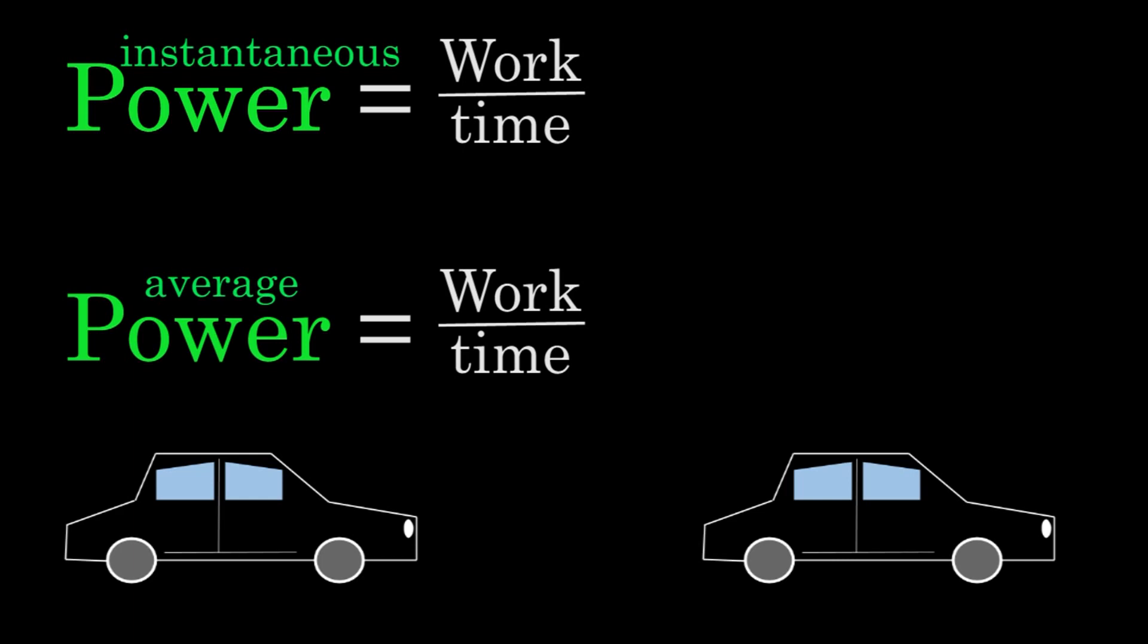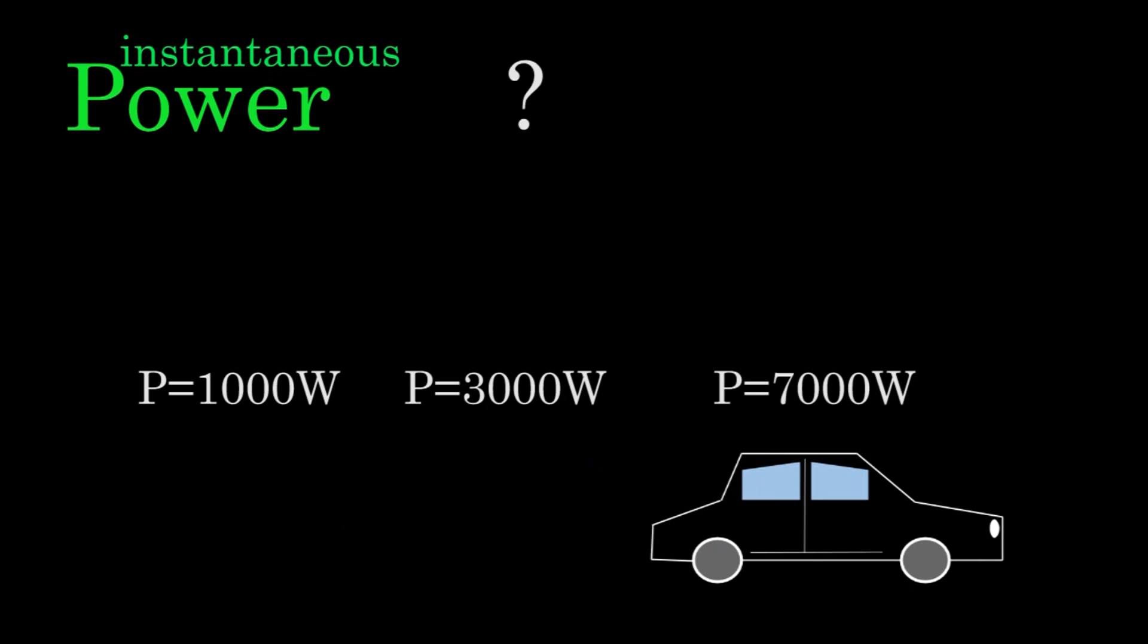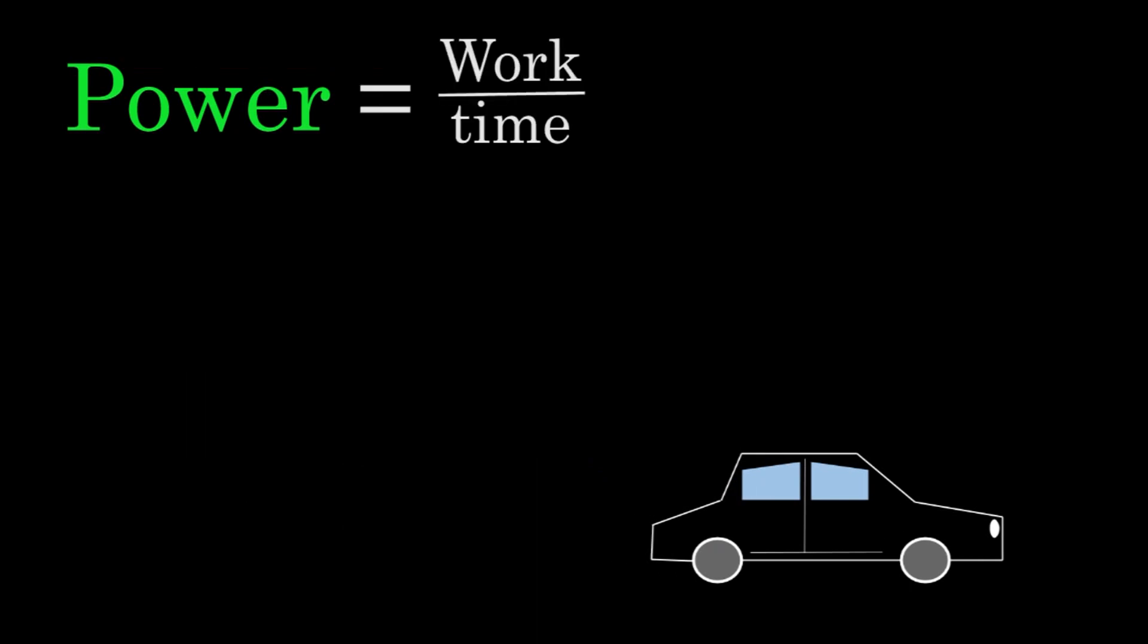Let's say you weren't so lucky and the instantaneous power was changing as the car progressed. Then how would you find the instantaneous power? Well, we know that power is just the work per time. So something we can try is to plug in the formula for work, which looks like F d cosine theta, and then divide by the time.